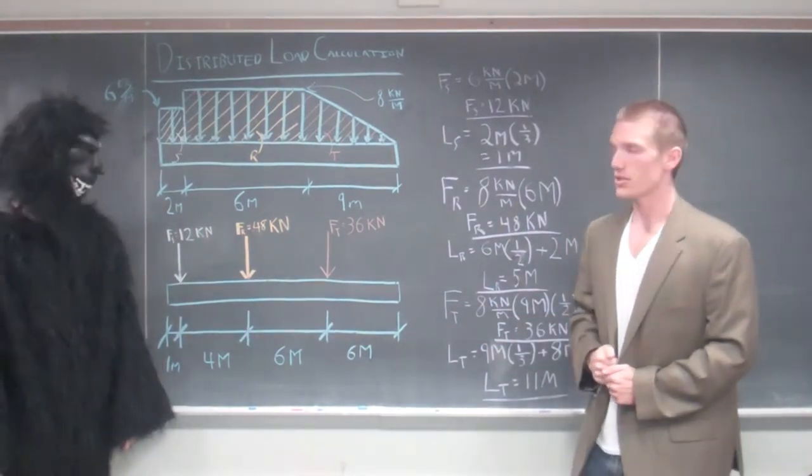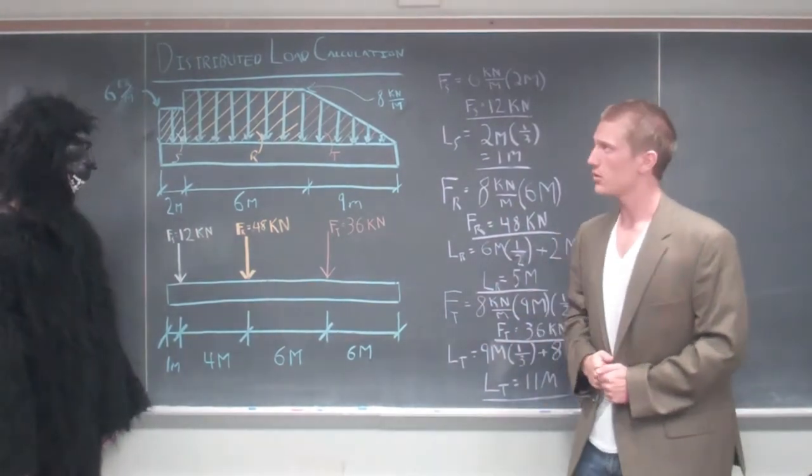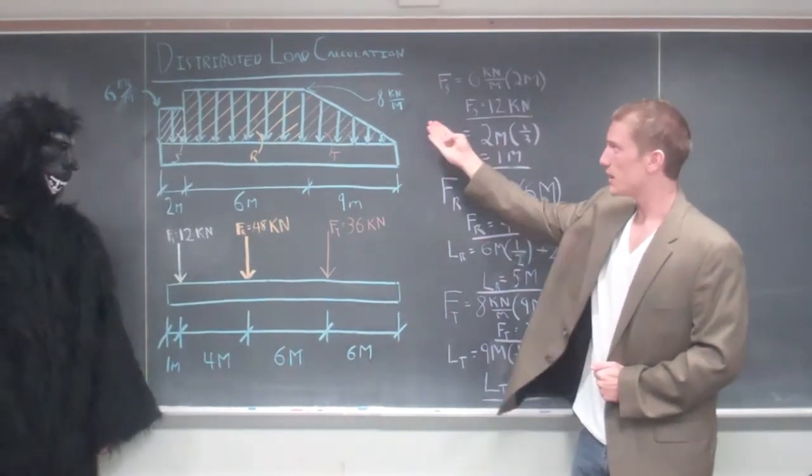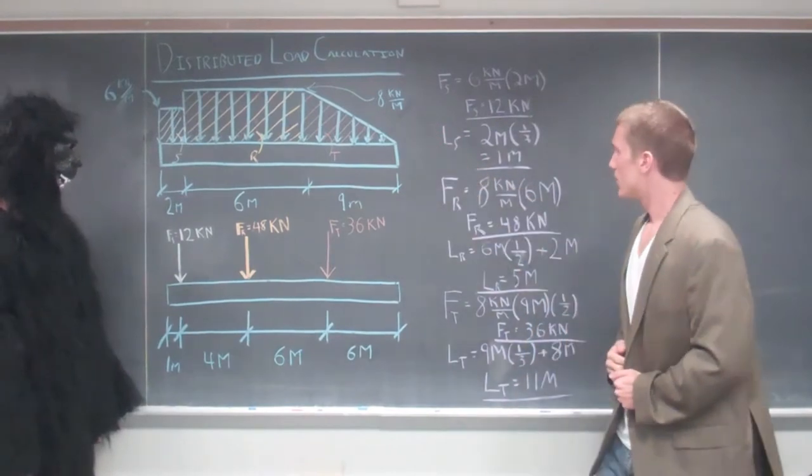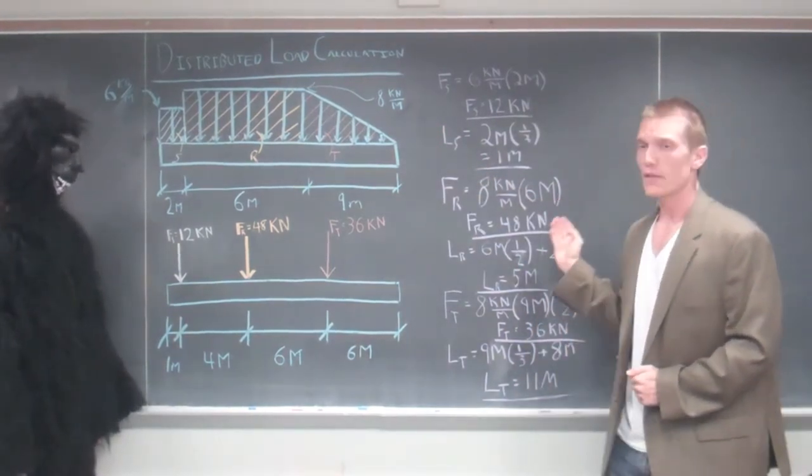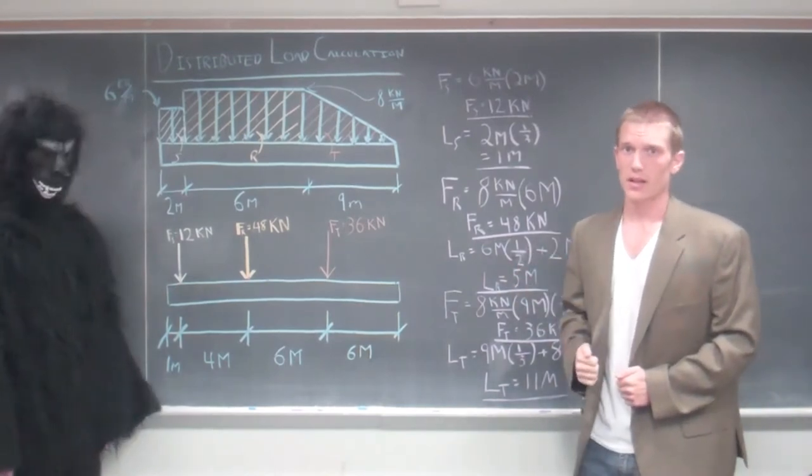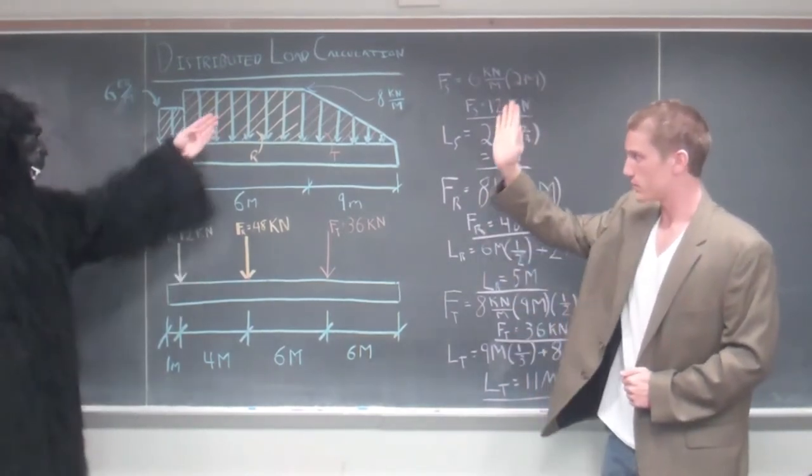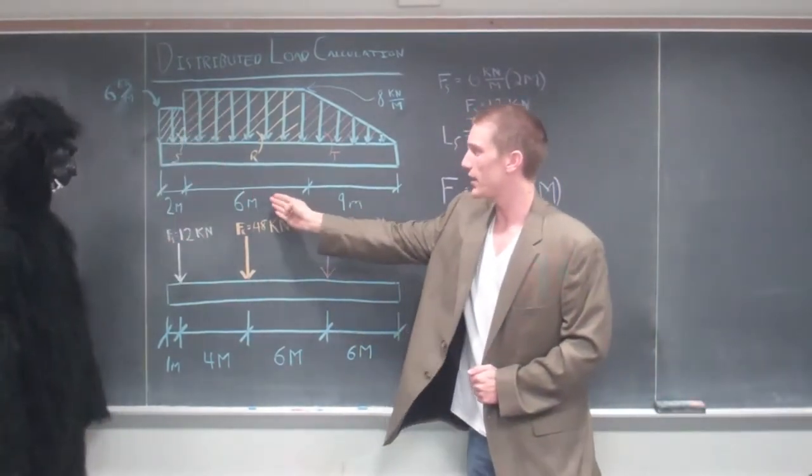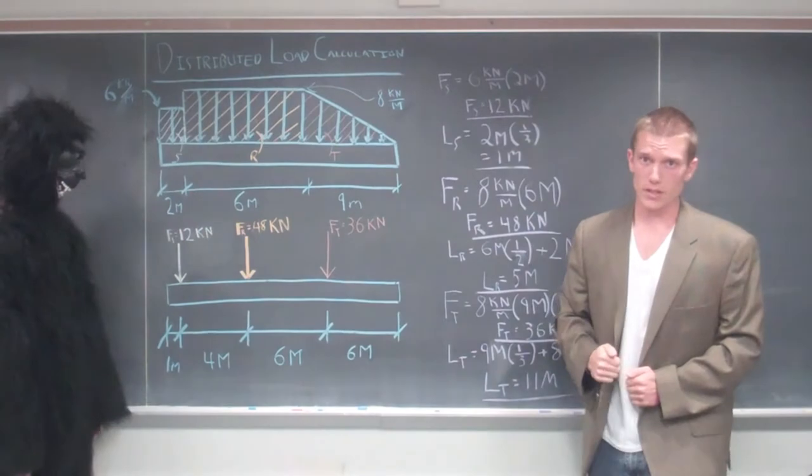For our second distributive load, the second large rectangle, it is calculated the same as the first one. It's the eight kilonewtons per meter multiplied by the six meters, giving us forty-eight kilonewtons. The distributive load force is right down the center, so that's three meters away from the beginning of that, added on to the two meters already, giving us five meters.